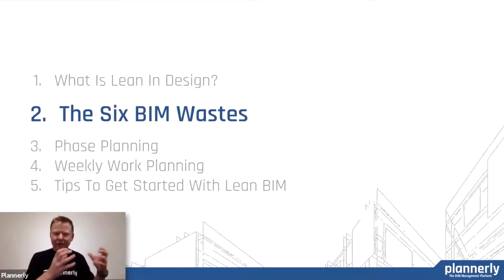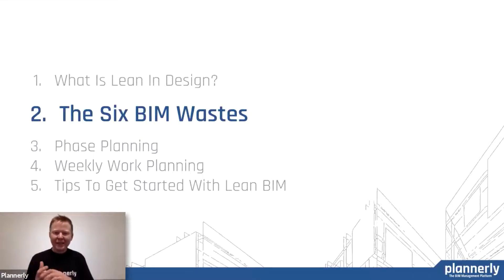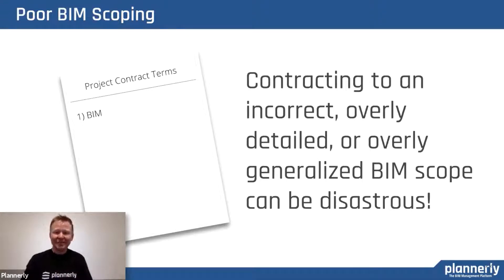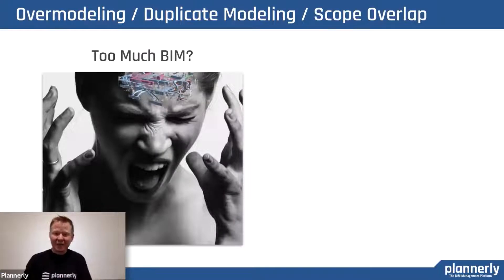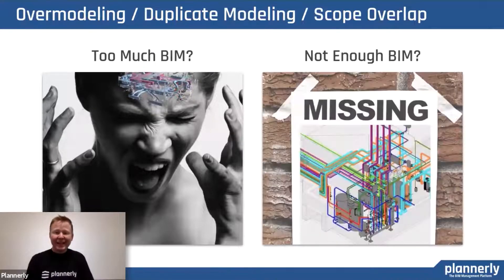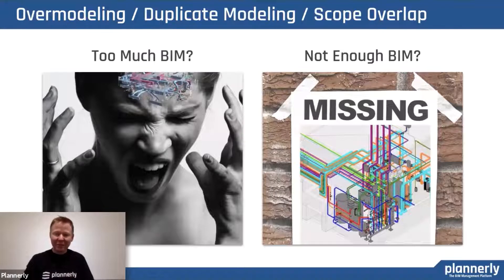So we've talked about lean in principle and the different terms used. Let's combine the two and start talking about what we're attacking in the BIM workflow. We've got six BIM wastes. The first one is poor scoping — how do you run a workflow that you have contracted for with maybe an incorrect, overly detailed, or overly generalized scope? It can be completely disastrous. The second is over and under production — too much modeling at the wrong time creates wasteful rework. And if the customer doesn't get what they need, they can't do their work. If it's a quantity takeoff and there's not enough BIM, the quantities will be incorrect.